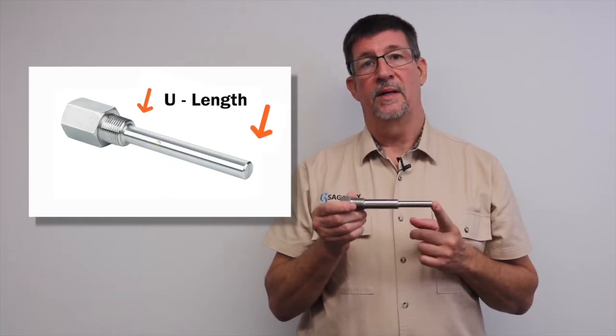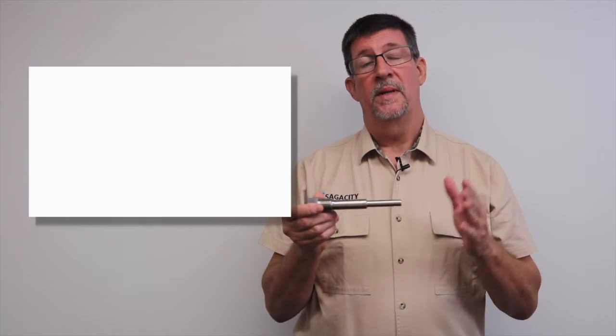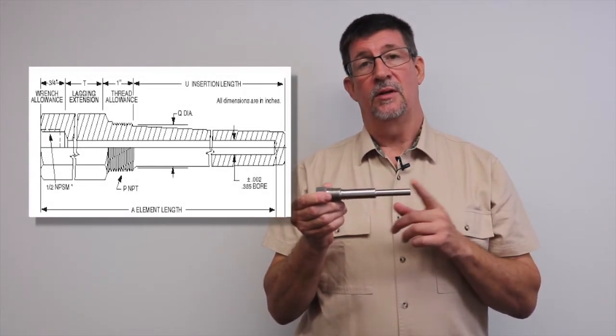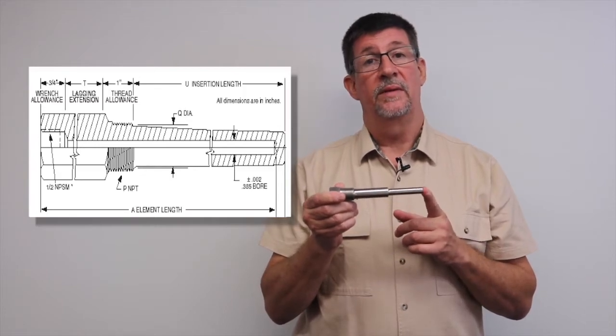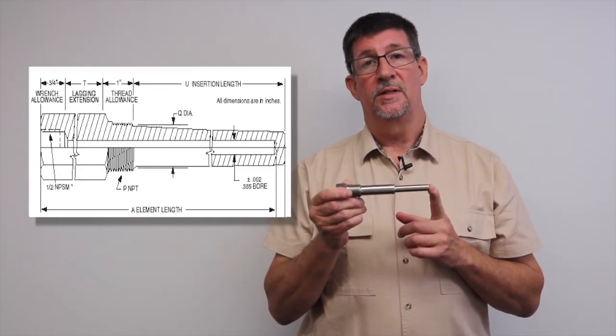The U-length is important because the longer the well, going back to the ASME standard, the more propensity for this to wobble in the process. So typically, the shorter the U-length you can get away with and still have an accurate temperature measurement, best situation is to do a compromise.